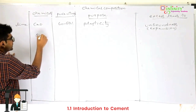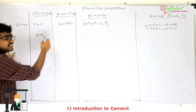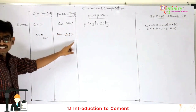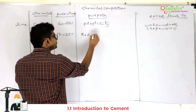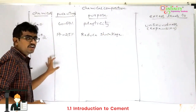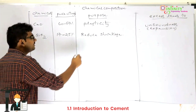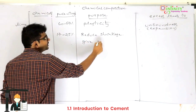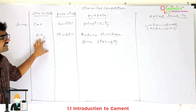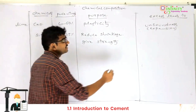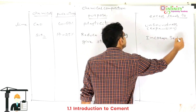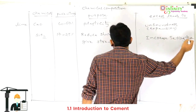The next chemical highest in percentage is silica, at 17 to 25 percent. The purpose of silica is: first, it reduces shrinkage; and second, it gives strength to the cement. If silica is excess, it will increase the setting time — it delays the setting.